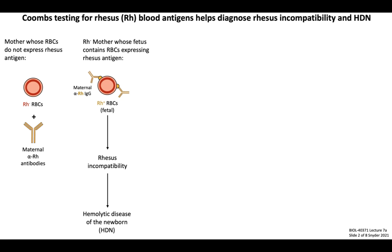Another type of agglutination-based serology assay is the Coombs test, which helps diagnose rhesus incompatibility in pregnant women. This is a condition where a mother who doesn't express the red blood cell antigen called rhesus has anti-rhesus antibodies, but becomes pregnant with a newborn that does express rhesus protein through paternal inheritance. Because maternal IgG antibodies are transported across the placenta, these anti-rhesus IgG antibodies can bind to rhesus-positive fetal red blood cells and tag them for destruction by phagocytosis. If rhesus incompatibilities aren't diagnosed early enough, the fetus can develop hemolytic anemia of the newborn, a dangerous condition requiring blood transfusions or even early induction of labor.